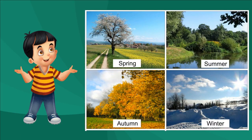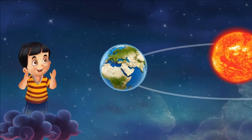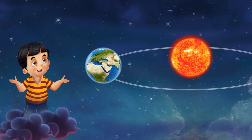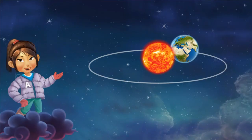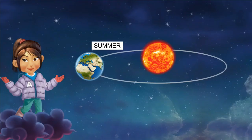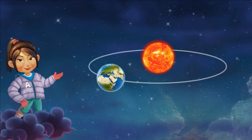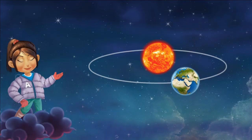Now I understand. The northern and southern hemispheres experience different seasons at the same time of the year. This change in seasons is caused by the tilting of the earth on its axis and the revolution of the earth around the sun. When the northern hemisphere experiences summer, the southern hemisphere experiences winter, and vice versa. Similarly, when the northern hemisphere experiences autumn, the southern hemisphere experiences spring, and vice versa.